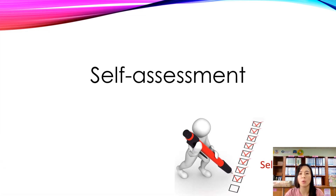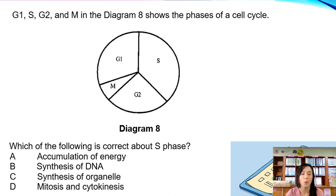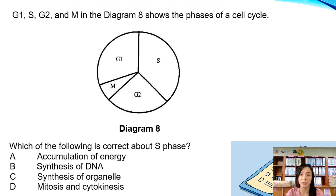Now we have finished what we need to learn today — it is self-assessment time. The first question: G1, S, G2, and M in the diagram show the phases of a cell cycle. Which of the following is correct about S phase? Options: A — accumulation of energy; B — synthesis of DNA; C — synthesis of organelles; D — mitosis and cytokinesis. Which one is correct?